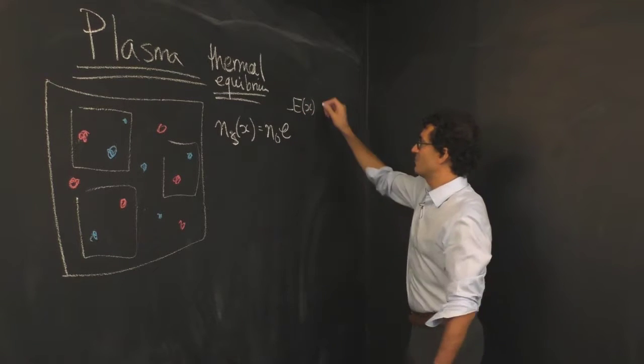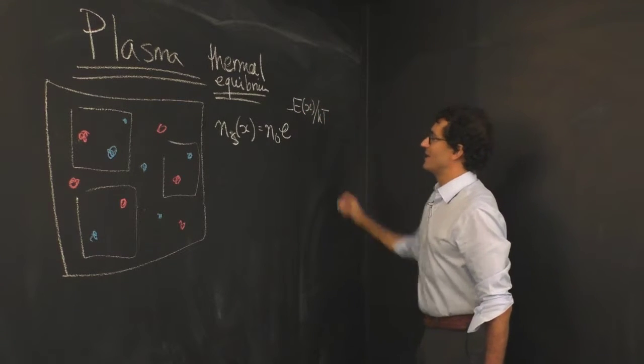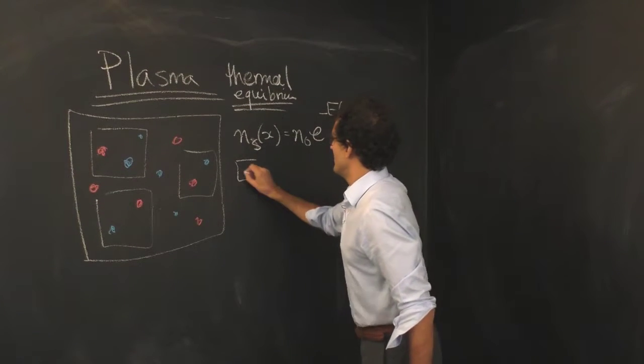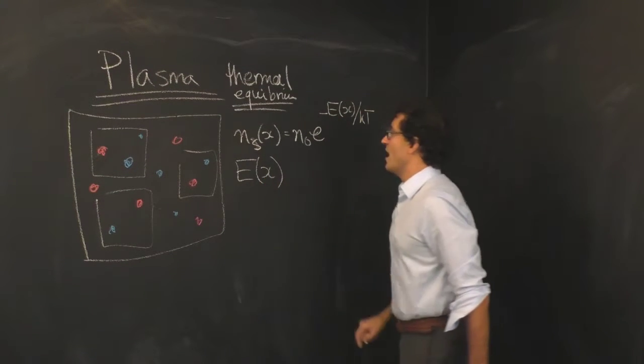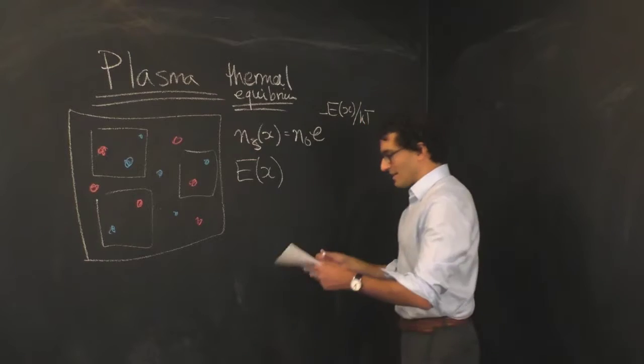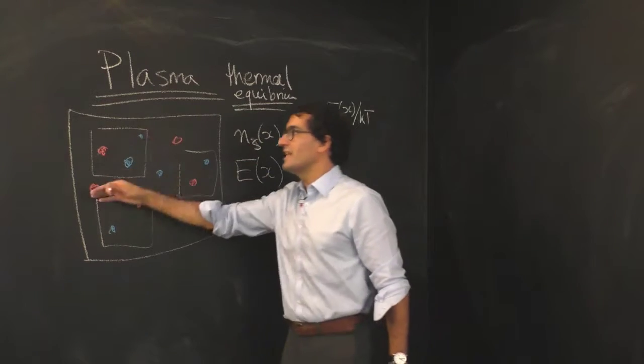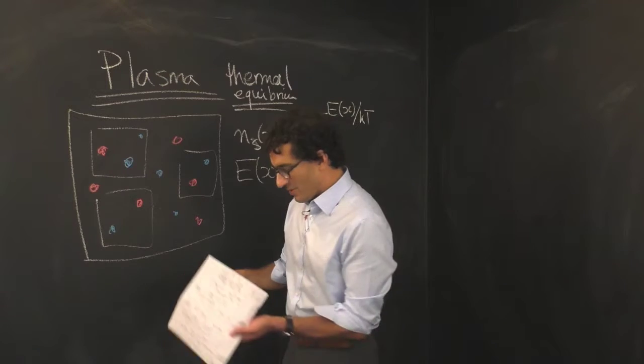So the energy of one of these species at some point x we're going to assume is entirely given by the electrostatic interactions. And so what that means is that if an electron is really close to a positron, or sorry, to an ion, to a positively charged ion, it's going to have a lower energy.